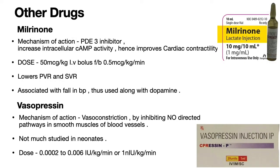Milrinone acts by inhibiting the phosphodiesterase enzyme, resulting in increased intracellular cAMP activity, improving cardiac contractility. Vasopressin acts by inhibiting nitric oxide-mediated pathways, thereby preventing vasodilation. Although these drugs are not much studied, they may be used in situations where other measures fail.